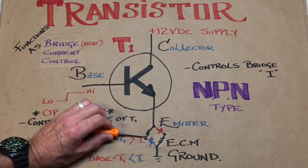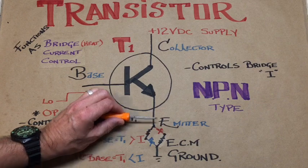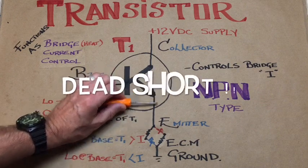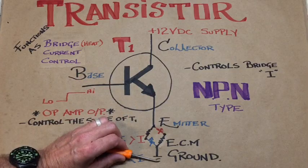I thought I'd better draw the bridge circuit in here from the output from the emitter because it's inaccurate to show the emitter going straight to ground.